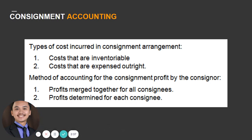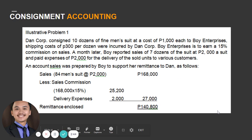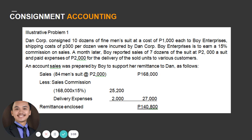When profits are determined separately, each consignee will have different ledger accounts. For example: Dan Corporation consigned 10 dozens of fine men's suits at a cost of $1,000 each to Boy Enterprises, with a shipping cost of $300 per dozen incurred by Dan Corporation. Boy Enterprises is to earn a 15% commission on sales. A month later, Boy reported sales of seven dozens of the suit at $2,000 per suit and paid delivery expenses of $2,000.